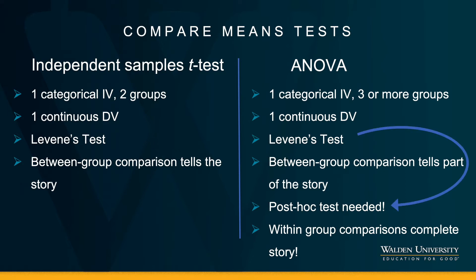The Levene's test is connected to the post-hoc test in the sense that the outcome of Levene's — whether you evaluate that as homogeneity of variances fulfilled or not — is going to drive which post-hoc test you report. When we set up the test, we ask for two post-hoc tests just in case. We will only report the one that squares with how Levene's came out.